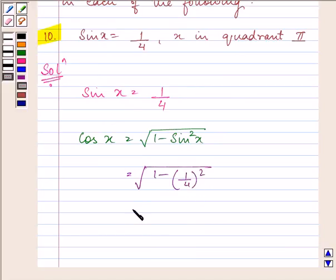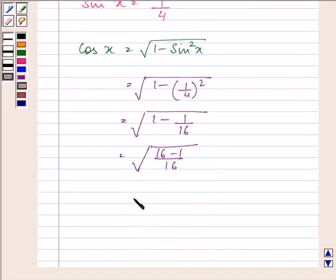This gives us √(1 - 1/16) = √((16-1)/16) = √(15/16) = √15/4. Since it's given to us that x lies in quadrant 2, therefore its value will be negative.